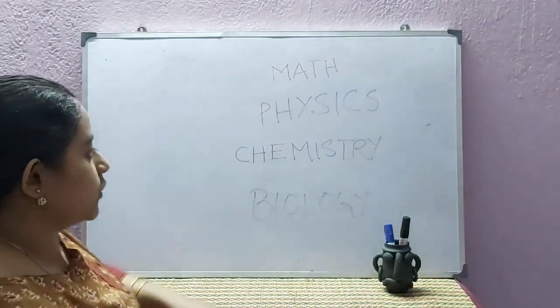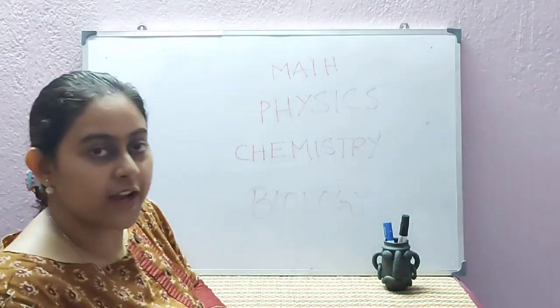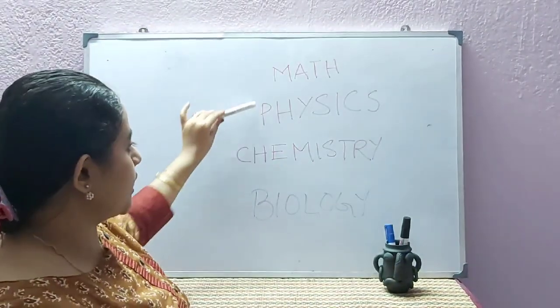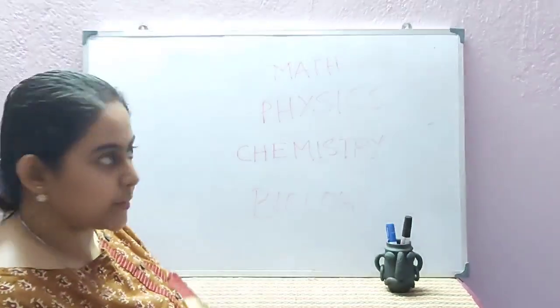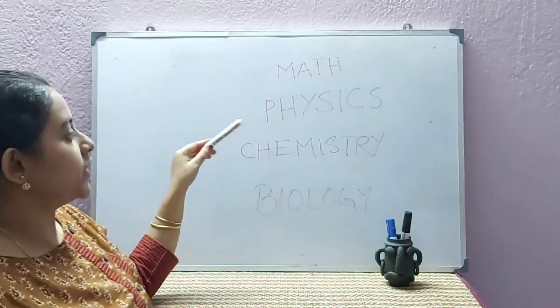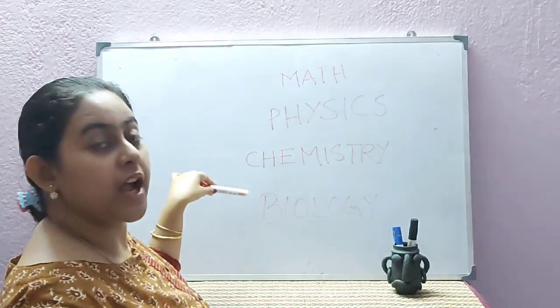Science can be classified into these four divisions: mathematics or math, physics, chemistry, and biology.